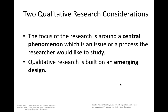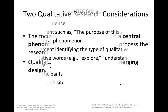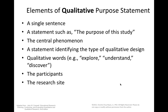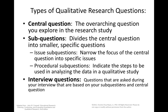Elements of a qualitative purpose statement include a single sentence with phrases like 'the purpose of this study,' a central phenomenon, identification of the type of qualitative design, qualitative words such as explore, understand, and discover, and mention of participants and research site. Types of qualitative research questions include the central question — the overarching question you explore — and sub-questions, which can be issue sub-questions that narrow the focus or procedural sub-questions indicating steps for analyzing data. Interview questions are based on the sub-questions and central question.